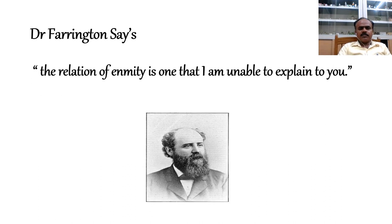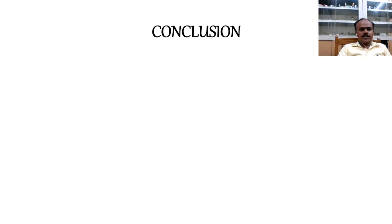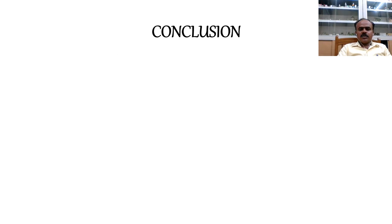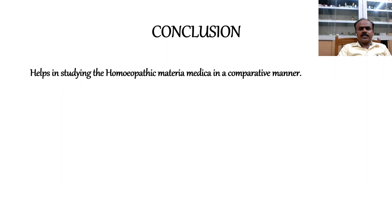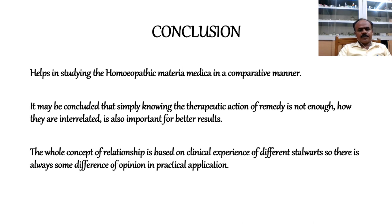Dr. Farrington says the relation of enmity is one he is unable to explain. Dr. Kent says Causticum and Phosphorus do not work with each other, nor does Apis work well after Rhus Tox. In conclusion, the relationship of remedies plays a very important role in the second prescription. It helps the physician determine whether a complementary drug, inimical drug, antidote, cognate, or placebo is required after the prescription, and helps in studying homeopathic Materia Medica in a comparative manner. Simply knowing the therapeutic action of a remedy is not enough; how they are interrelated is also important for better results. The whole concept of relationship is based on the clinical experience of different stalwarts, so there is always some difference of opinion in practical application.